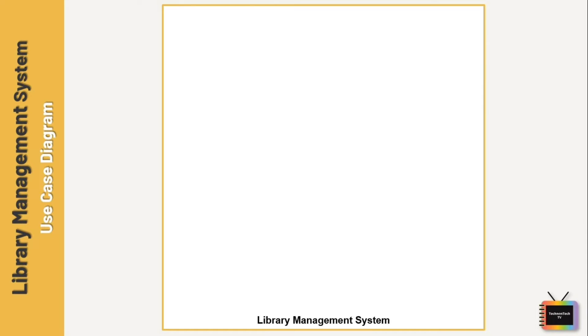Now let's draw a use case diagram for a library management system. First we'll draw the system boundary and then write the use case name — this is mandatory. We are drawing a general use case diagram, which shows the main functionalities of the system and the general processes of library management.